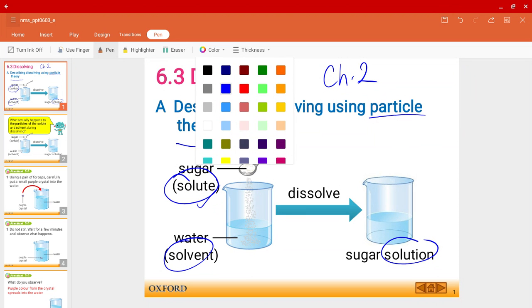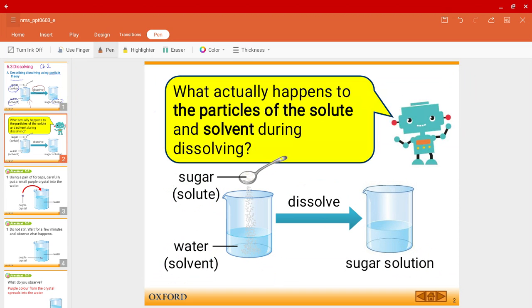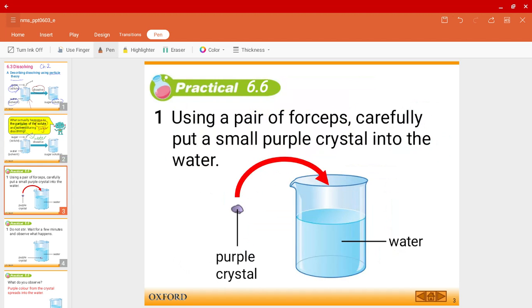Now pay attention to the diagram over here. The sugar when you add it to water undergoes a process called dissolving. So it dissolves in water and eventually you'll get a solution. So what actually happens to the particles of the solute, in this case the sugar, and what happens to the particles of the solvent, in this case water, during this dissolving process. So again this topic has to mainly be dealing with particles. So let's have a look in details what happens.